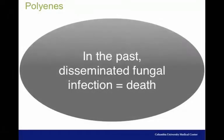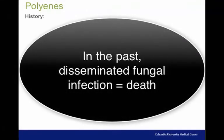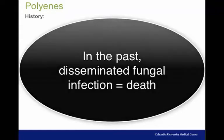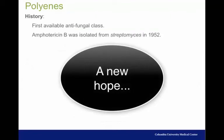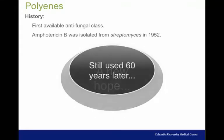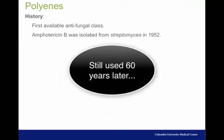At the turn of the 20th century, disseminated and even primary pulmonary fungal infections were almost uniformly fatal. Then, in the 1950s, a drug was isolated from Streptomyces bacteria. This drug class, called the polyenes, revolutionized the treatment of fungal infections.